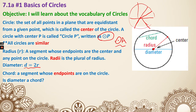Next, chord. Chord is a segment whose endpoints are on the circle. You can see this one right here - these are the endpoints, they're both on the circle, and that is a chord. So we have a question: is diameter a chord? If you look at the diameter, the endpoints are right here and they are on the circle. So yes, it is a chord, and it's actually the longest chord in the circle.